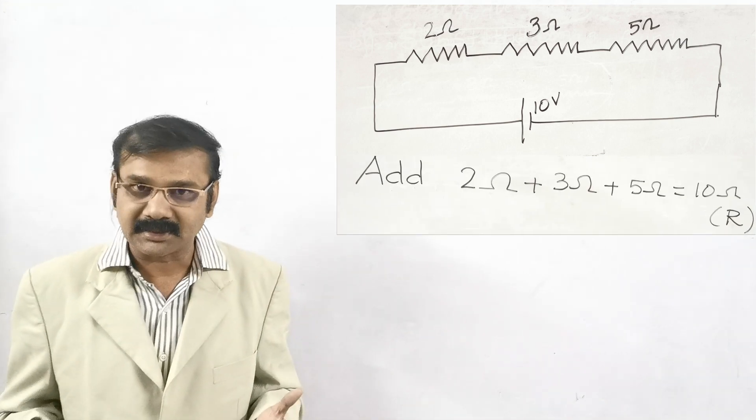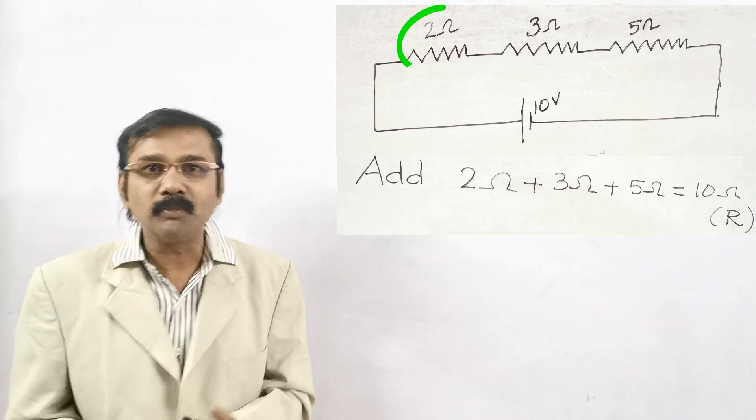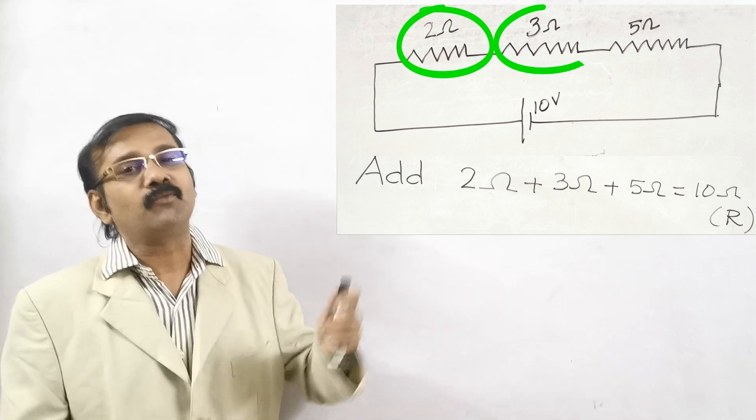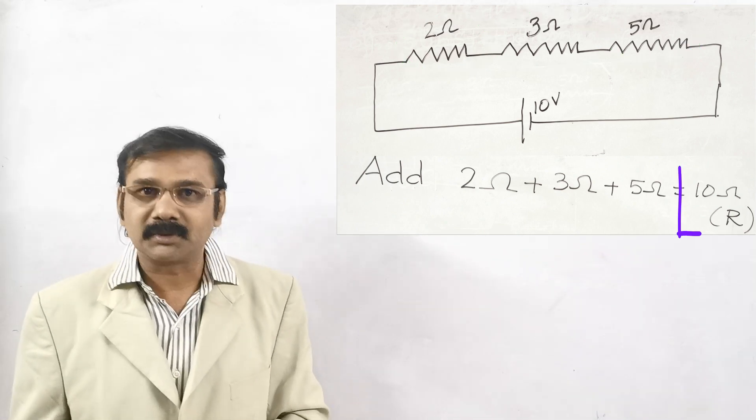Add all the three resistances. What are the resistances? Yes, you are right. It is 2 ohms plus 3 ohms plus 5 ohms. You just add everything. You will get 10 ohms.